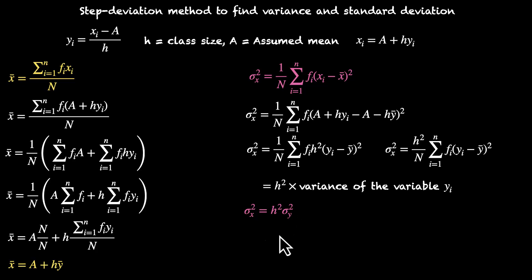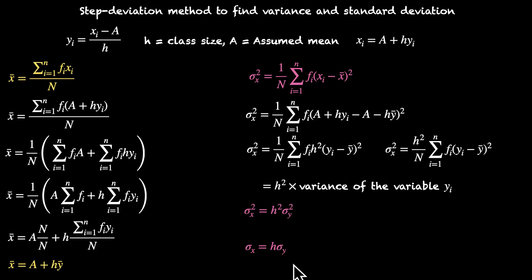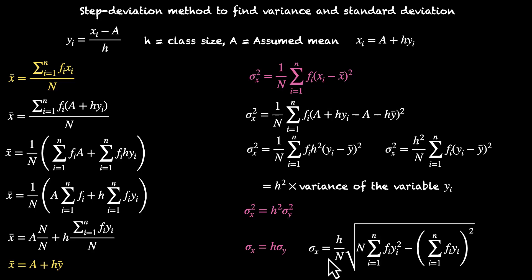And if we take the square root, we have σx = h × σy. This means the standard deviation in x is equal to h times the standard deviation in y. Now if we write the formula for standard deviation, that's going to be equal to (h/n) × √[n·Σ(fi·yi²) − (Σfi·yi)²].